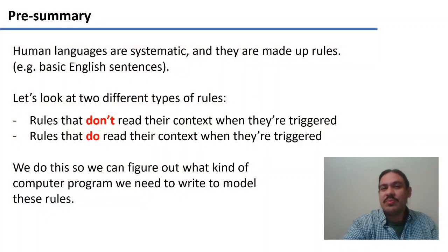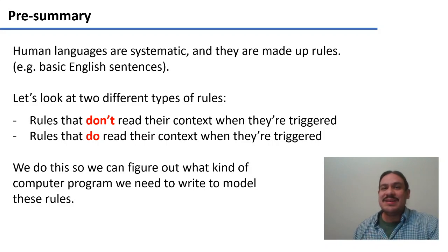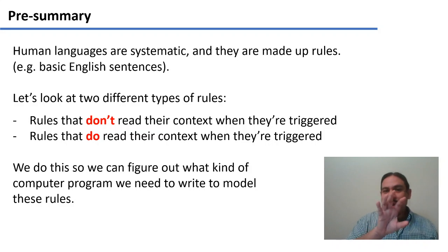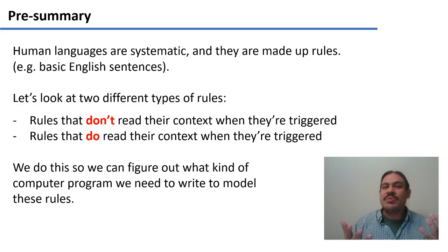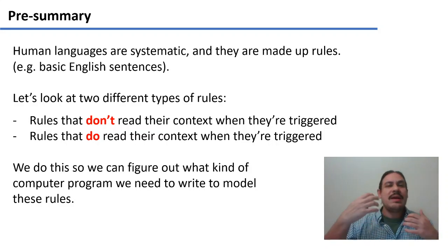Let's do a brief recap of what we talked about when we were first looking at rules. Human languages are systematic and they are made up of rules. For example, we had the English basic sentences — Jane eats ice cream, Jane eats pizza — where we had a noun, a verb, and nouns for the direct object. In some language class you've taken, teachers would show you rules for how to build verbs or how to order words.